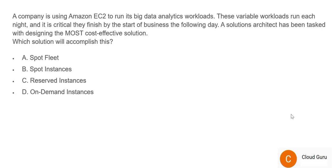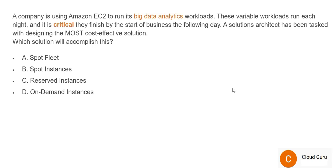Let's look at question 67. Please pause the video and mark your keywords. The story: you have EC2 instances running huge big data analytics with variable workloads that run each night and must critically finish before the start of business — for example, starting at midnight and finishing before 8 AM. What is the most cost-effective solution?